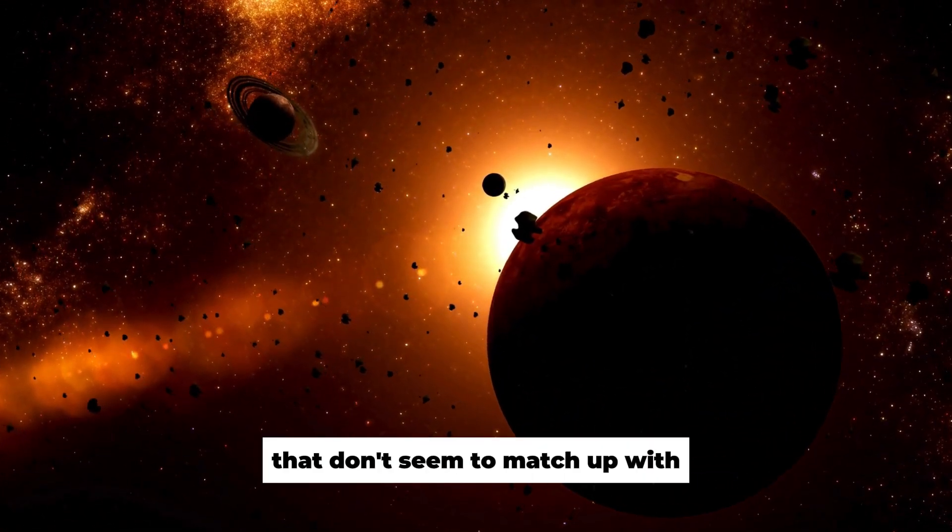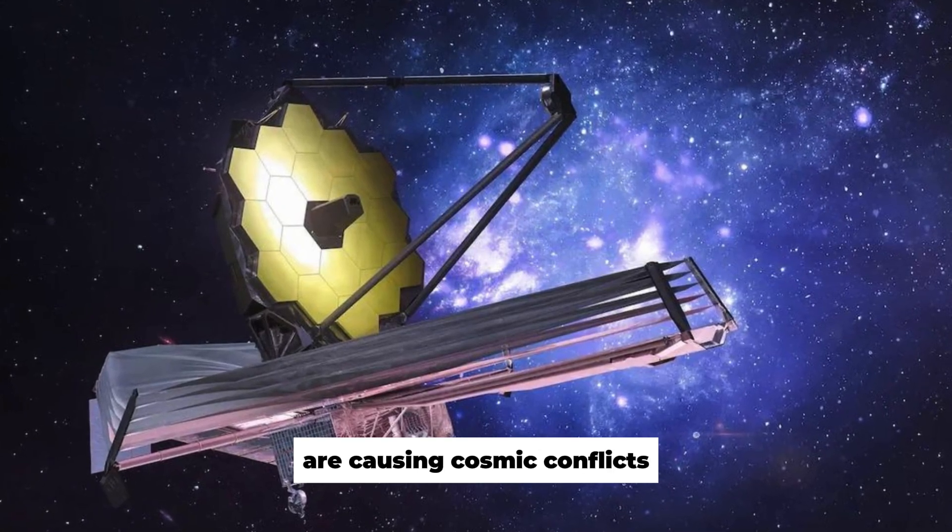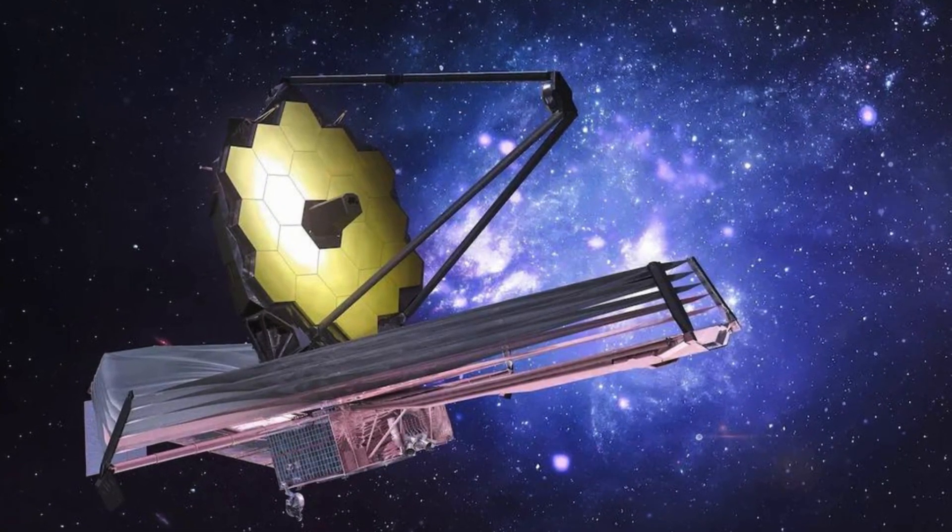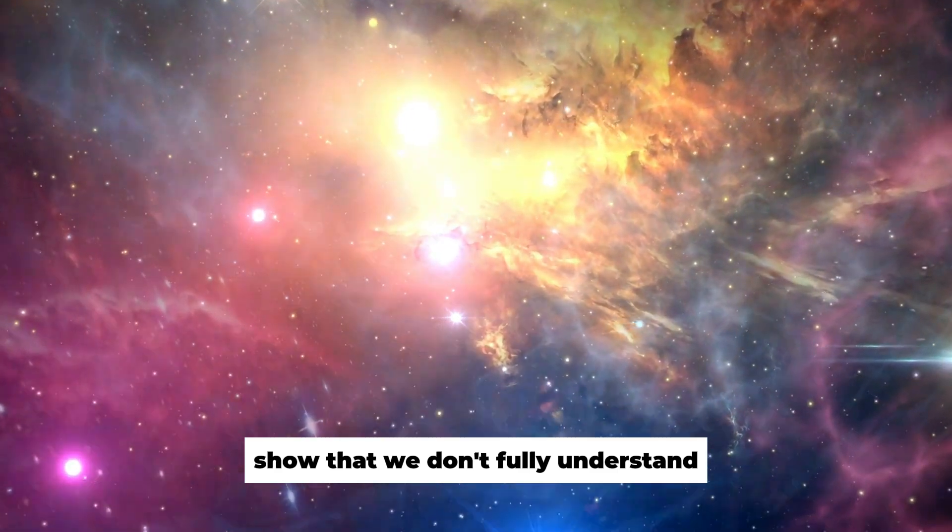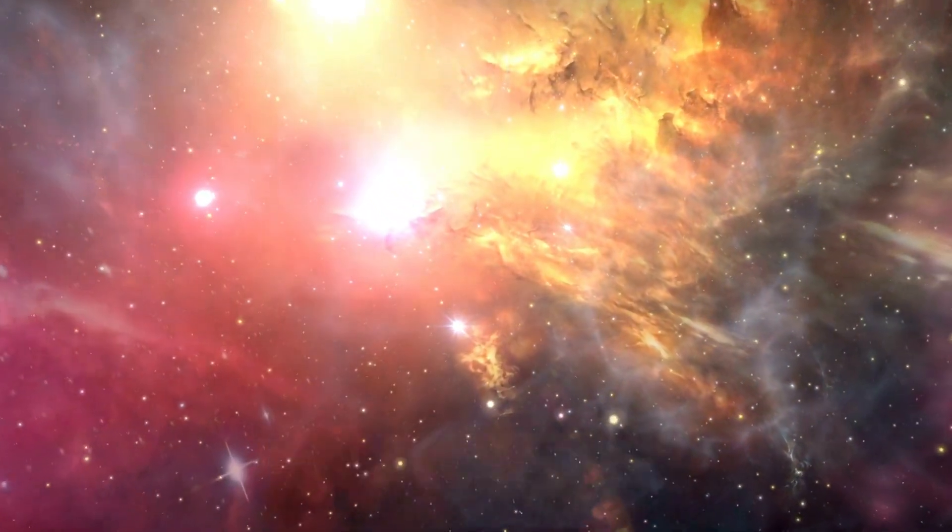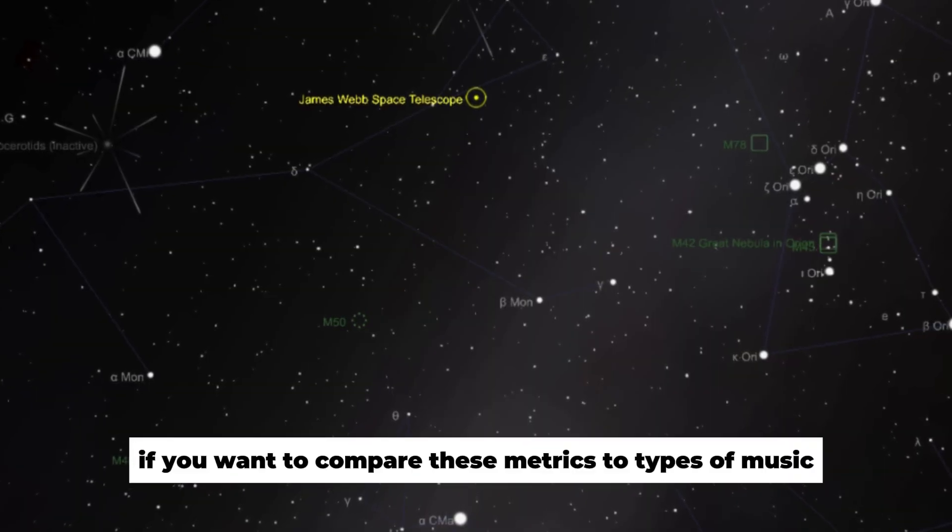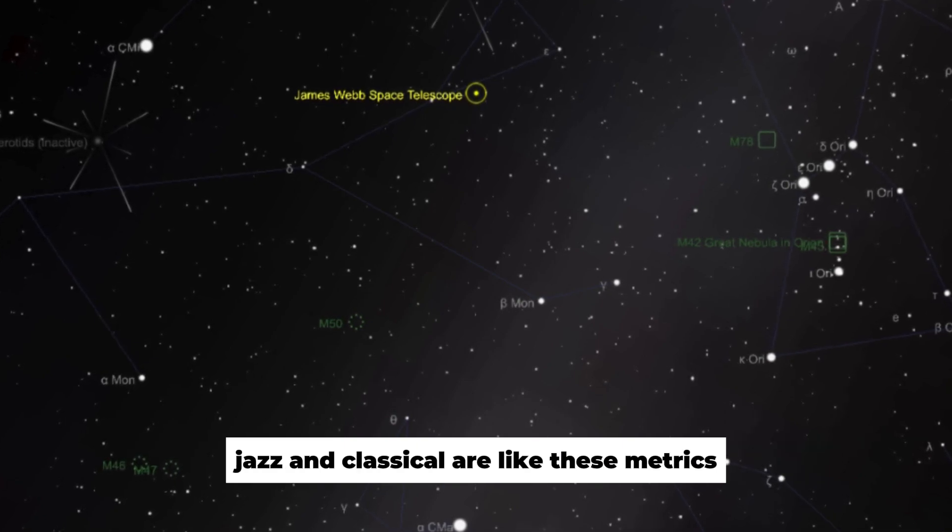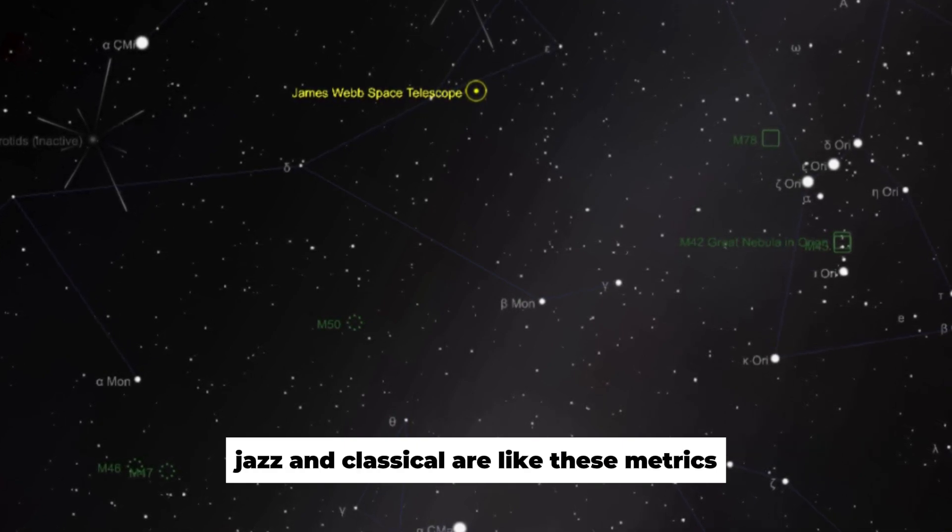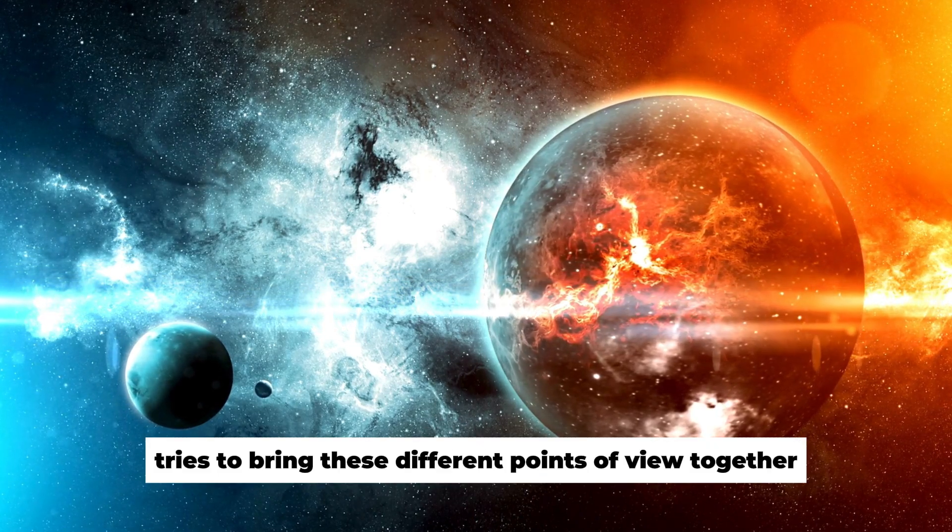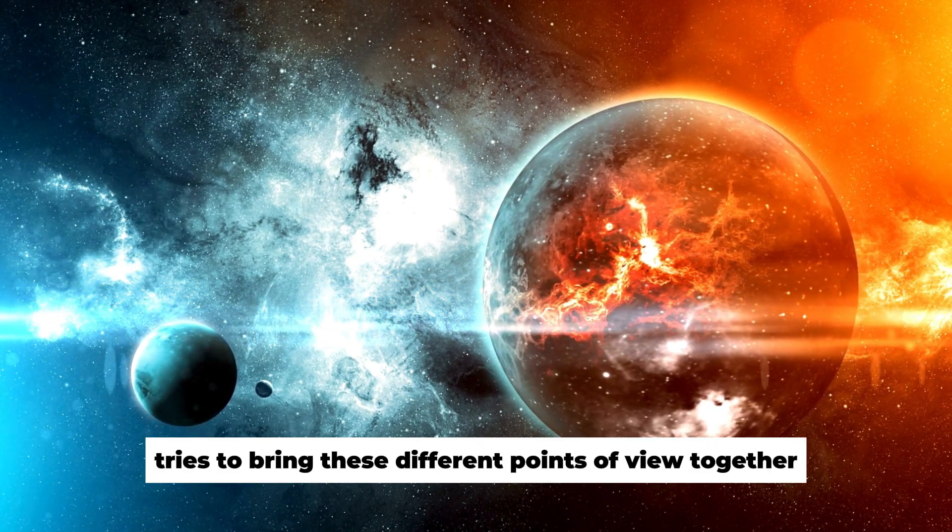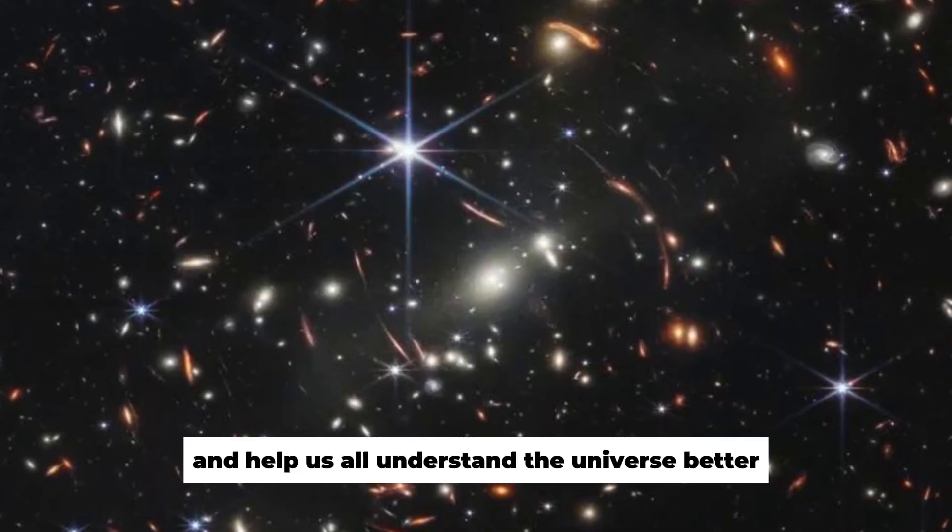Why do data that don't seem to match up with the structure of the universe cause cosmic conflicts? Differences in measurements like these show that we don't fully understand how the world works right now. If you want to compare these metrics to types of music, jazz and classical are like these metrics. Each has its own style but is still linked. Flamingo tries to bring these different points of view together.